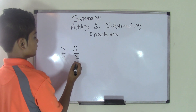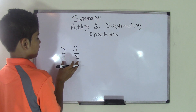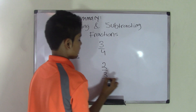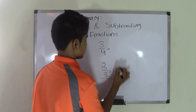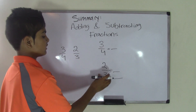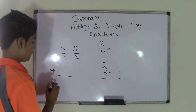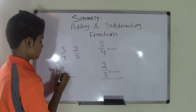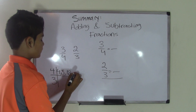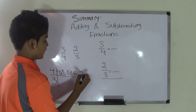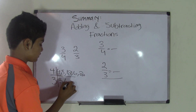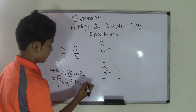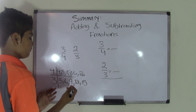First, align the two fractions — three-fourths and two-thirds. Now you need to find the common multiple for the two denominators, which are four and three. So let's write the multiples of four and three up to five. Four times one is four, four times two is eight, four times three is twelve, four times four is sixteen, four times five is twenty. Three times one is three, three times two is six, three times three is nine, three times four is twelve, three times five is fifteen. Now we have the multiples of each number up to five.